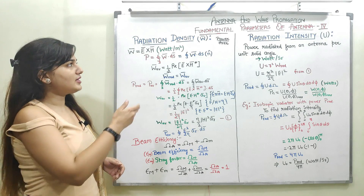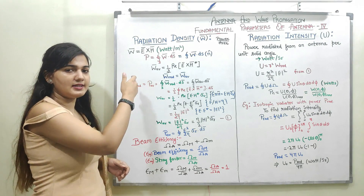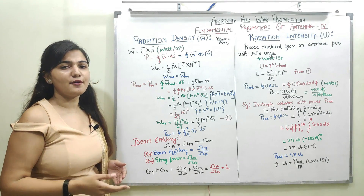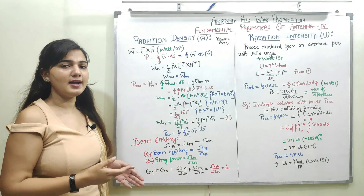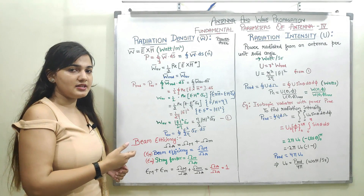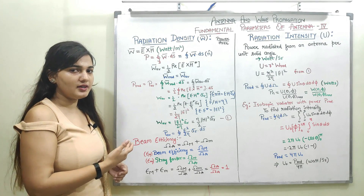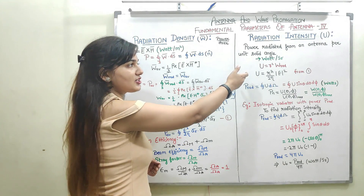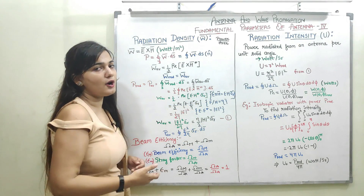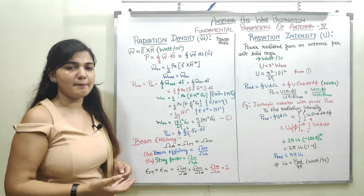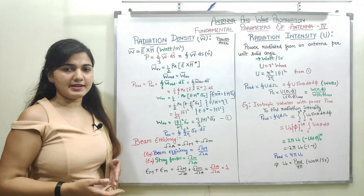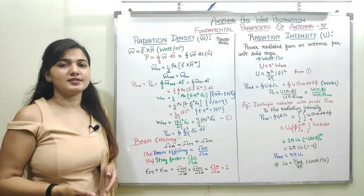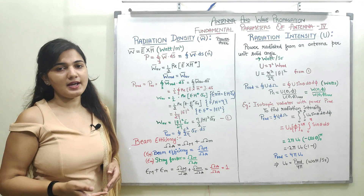Radiation density is dependent upon the square of the distance from the antenna — it is inversely proportional to the square of the distance from the antenna. Radiation intensity, on the other hand, is not dependent upon the distance from the antenna; it is independent with respect to distance from the antenna.